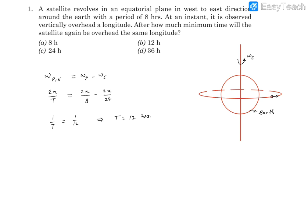On the equatorial plane, this satellite is revolving. Let's say the angular velocity of the satellite is omega p. I'm just writing it as omega p. That's the angular velocity of that satellite.